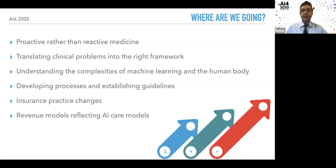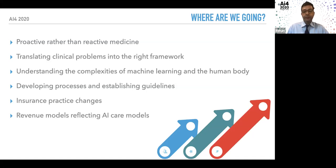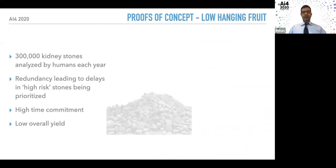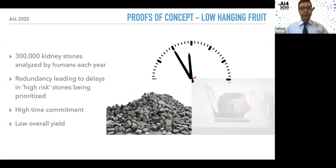We also need to consider how AI will change insurance practices and revenue models. For example, if a patient gives their data to a healthcare system, maybe they should receive a cutback — offsetting some of their medical bills — as compensation for the information they provide.